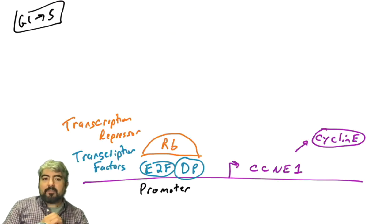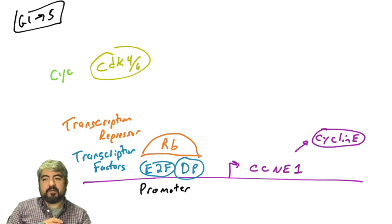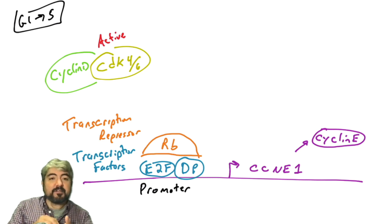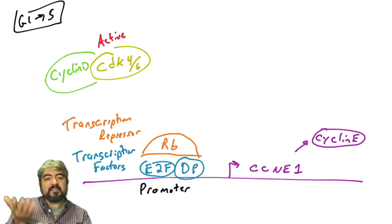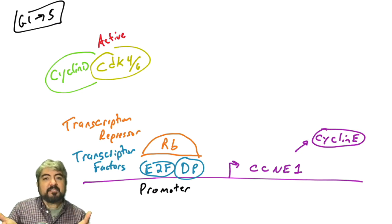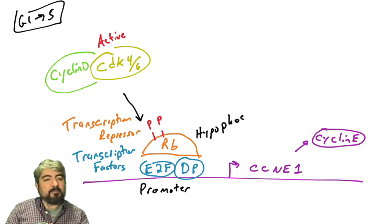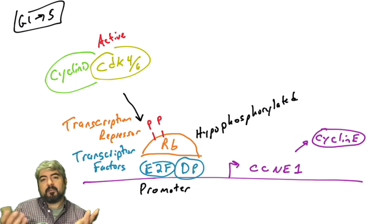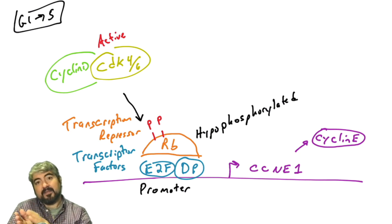Now let's talk about what happens when cells are told to go through the cell cycle. As covered in previous videos, cyclin D levels rise when cells are stimulated with growth factors or other extracellular signals. When cyclin D levels rise, cyclin D joins forces with CDK4 and CDK6, and this kinase becomes active. It phosphorylates its substrates, and one of its substrates is the RB protein. RB actually has many residues it can be phosphorylated on — over a dozen.